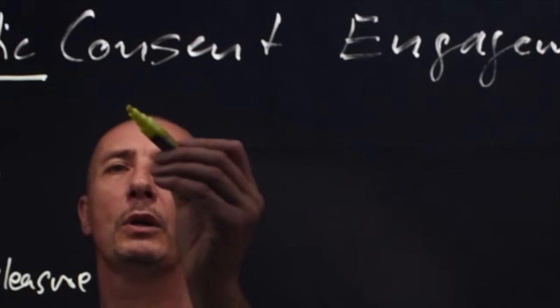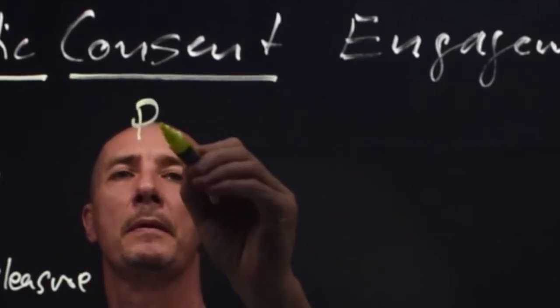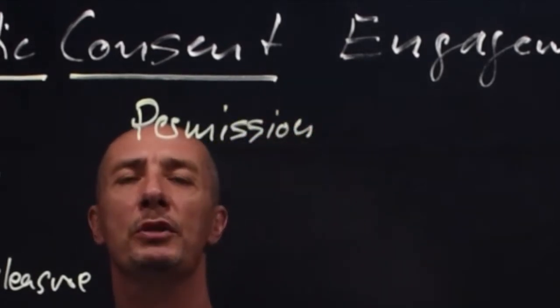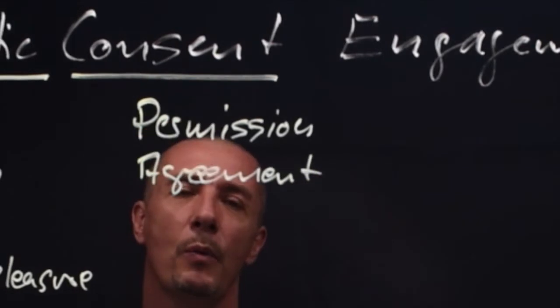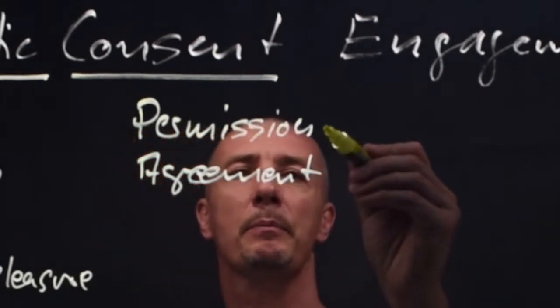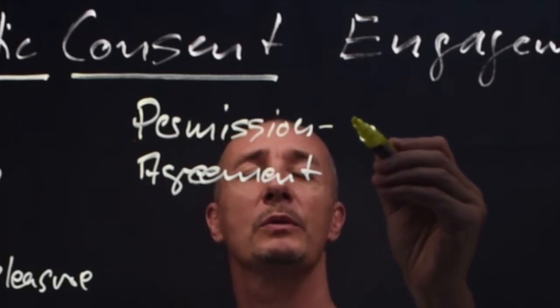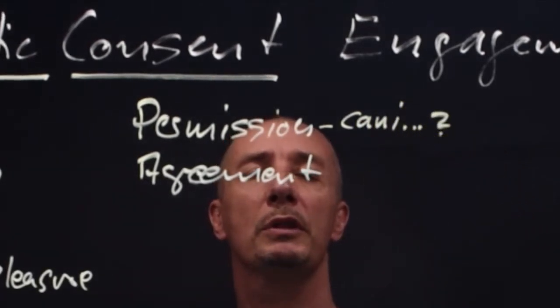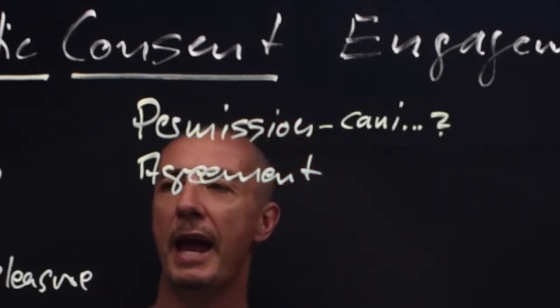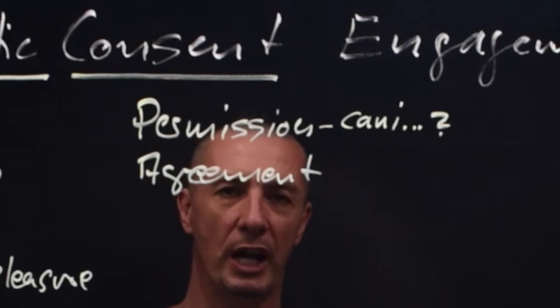Then we go to consent. Consent is divided into either permission or agreement. Permission is going in a different way of a request with the question, can I do something for myself? So going into that action for a benefit of your sensations or feeling.